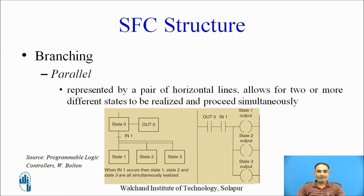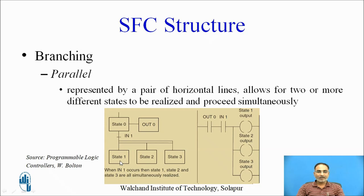In parallel branching, represented by a pair of horizontal lines, two or more different states are realized and proceed simultaneously. For example, if output 0 occurs and input 1 is realized, states 1, 2, and 3 are all simultaneously realized. This is a parallel branching example with its equivalent ladder diagram. These types of branching are used for multi-output processes.